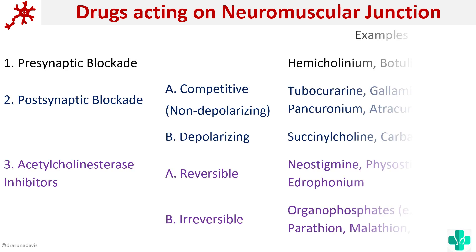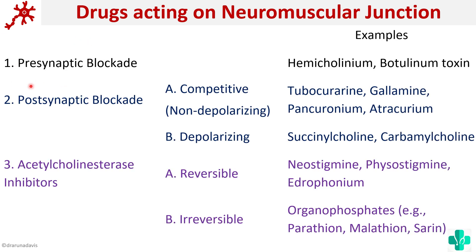To sum up, we have seen the different classes of drugs acting on the neuromuscular junction. Drugs causing presynaptic blockade include hemicholinium and botulinum toxin. Drugs causing postsynaptic blockade are classified into competitive (non-depolarizing) drugs — examples include curare (tubocurarine), gallamine, pancuronium, and atracurium — and depolarizing drugs, examples being succinylcholine and carbamylcholine. The third class is acetylcholinesterase inhibitors: reversible examples are neostigmine, physostigmine, and edrophonium; irreversible examples are organophosphates such as parathion, malathion, and sarin, which are usually seen in insecticides.